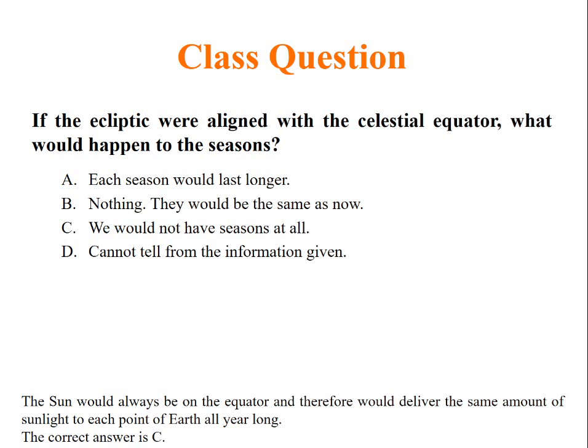The answer is C. Because of the tilt, there is winter and summer. If the celestial equator and the ecliptic were aligned, then there would be no seasons.